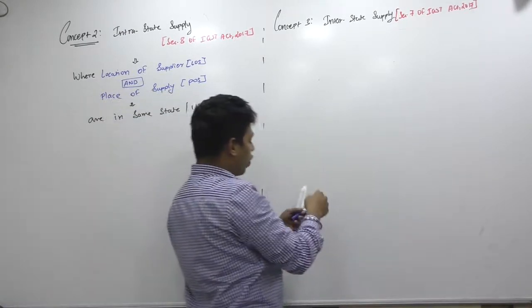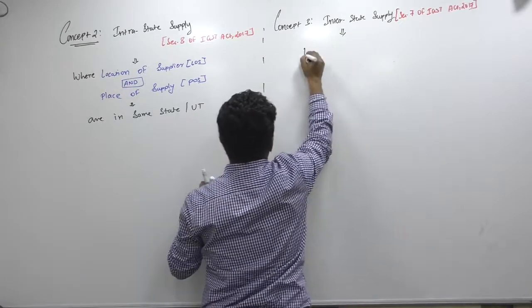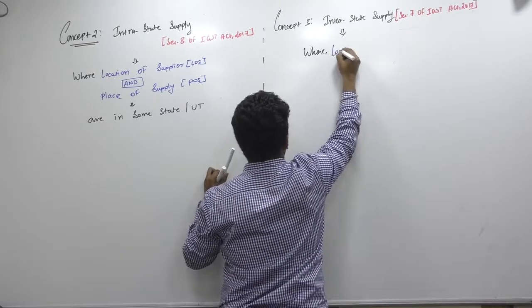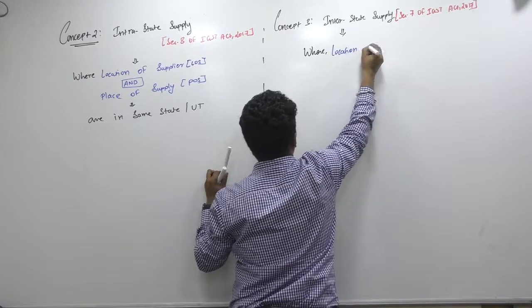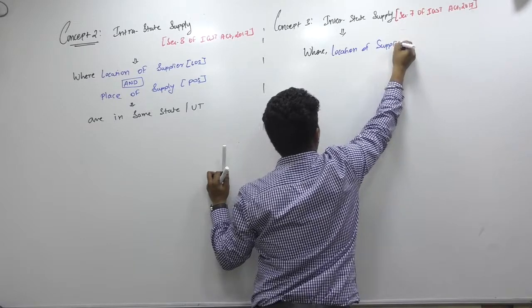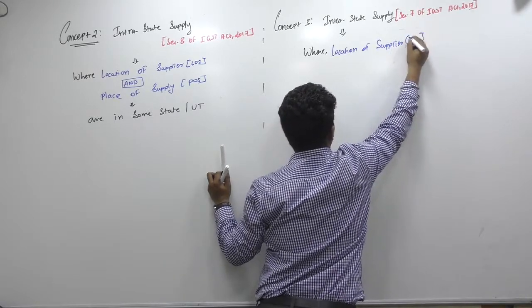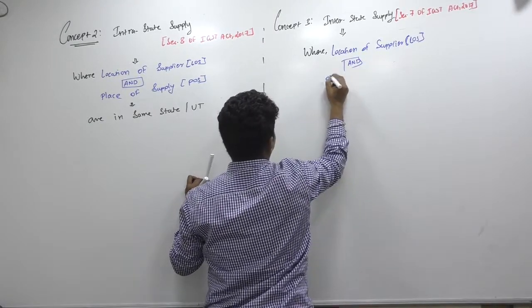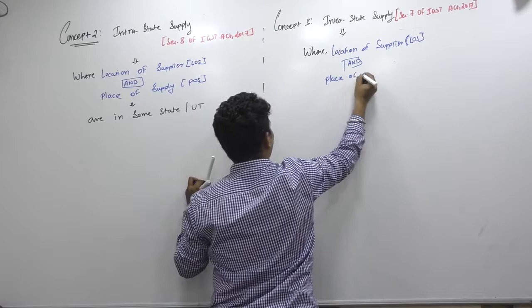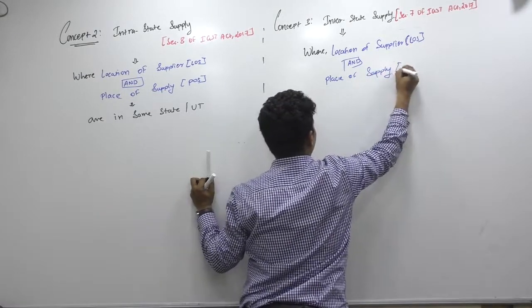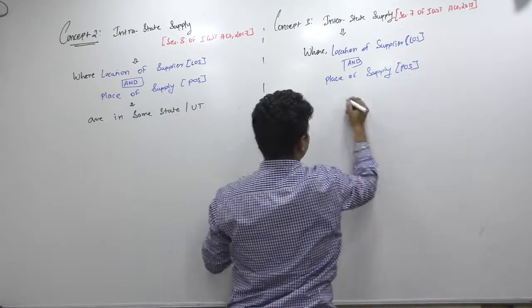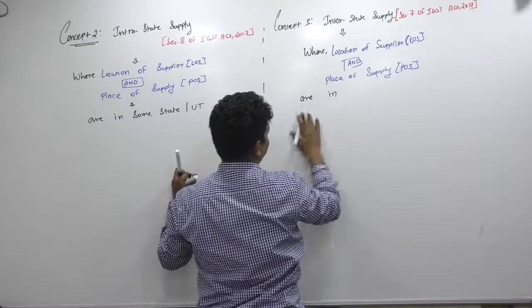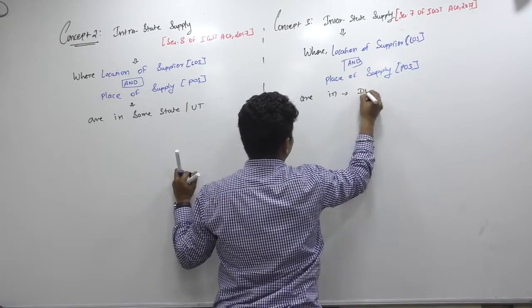Can you define inter for me? What will they write? Where? Location of supplier—that is LOS, we will call it LOS—and place of supply, that is POS, are in... Can you tell me? Different.